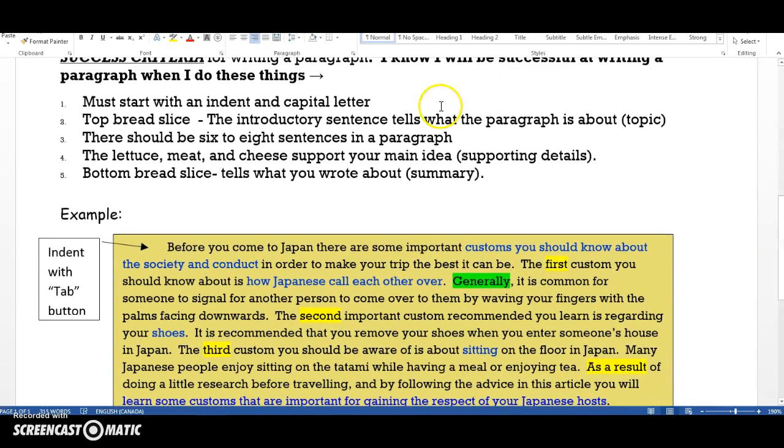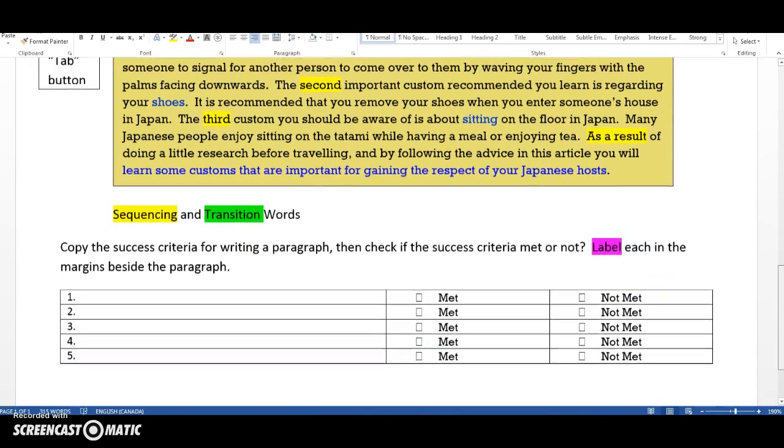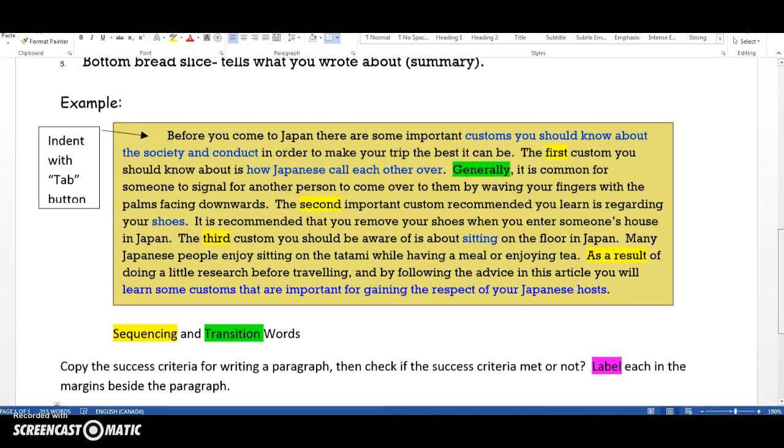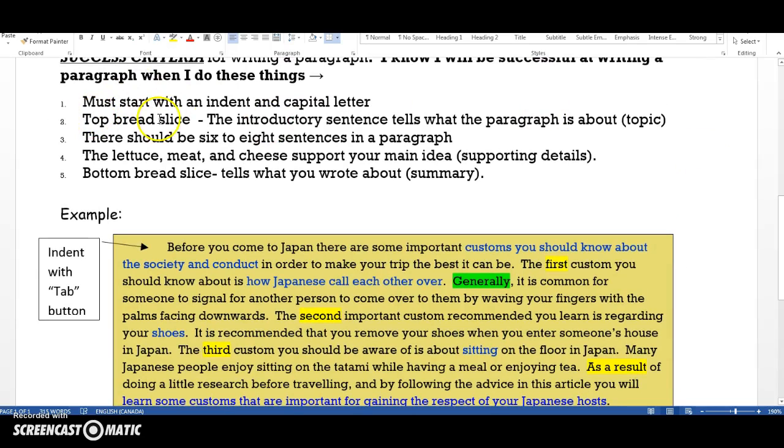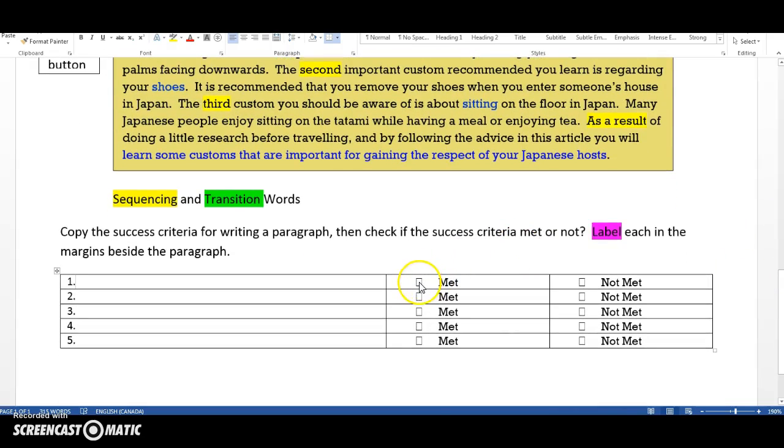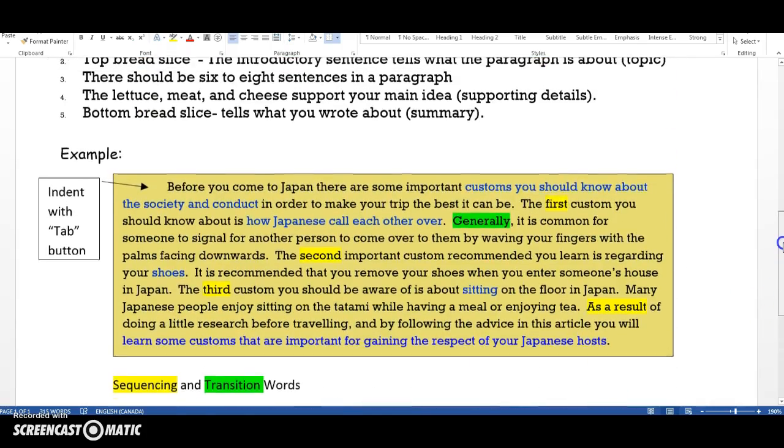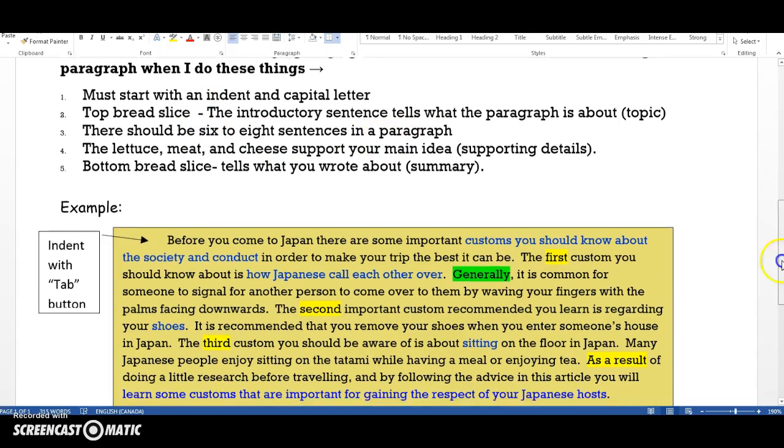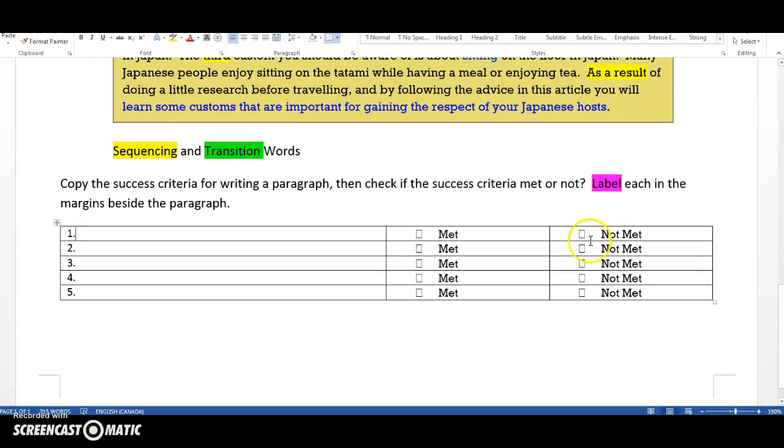Copy the success criteria here with a pencil or your computer into this space here. Then, read this paragraph. And if you see the success criteria in the paragraph, then check this box. This means that whoever wrote this paragraph has met the success criteria. If you do not see it, if you do not see supporting details, or if you do not see six to eight sentences in this paragraph, then you would write, this person has not met the success criteria by checking this box.